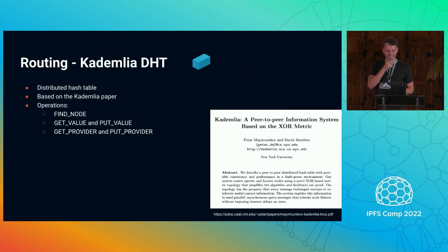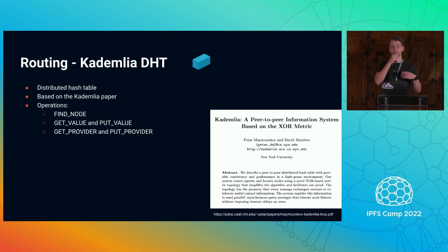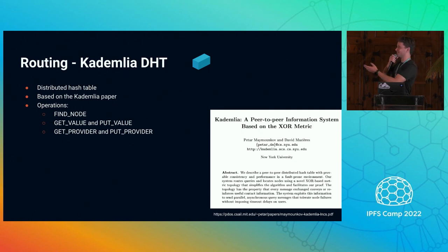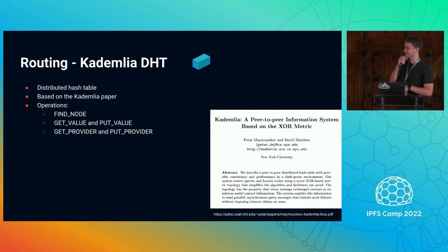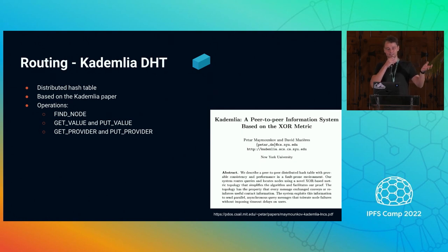The next one, a hard one, is routing. Once you've discovered random peers in the network, you probably want to connect to specific peers. For example, say Dennis and I want to have a one-on-one chat. I would like to find Dennis somehow in this network. Our routing layer, mostly implemented via Kademlia, allows me to find Dennis, make a connection, and then exchange messages directly.